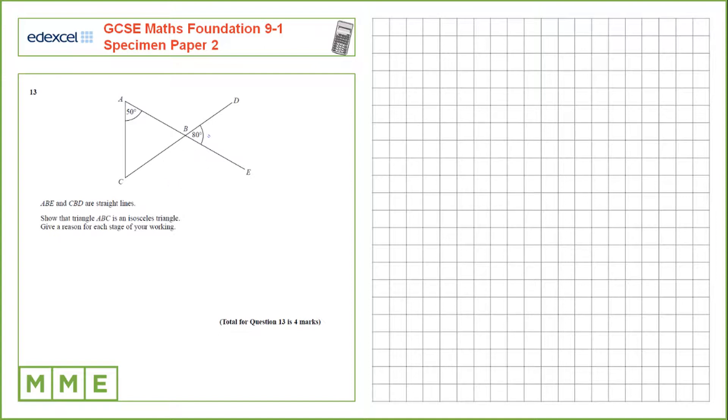The first stage of our working, we can show that ABC here is equal to 80 degrees. The reason being it's a vertically opposite angle to DBE.